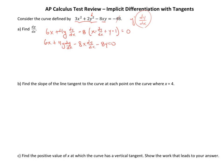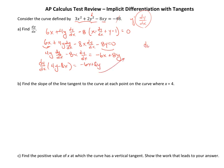We need to collect the dy/dx's on the same side, so this becomes 4y dy/dx minus 8x dy/dx, and we're going to bring the negative 6x and the 8y over to the other side. Now, we can factor out the dy/dx, and we're going to be left with 4y minus 8x, equals negative 6x plus 8y. So, dy/dx will be negative 6x plus 8y, all divided by 4y minus 8x.